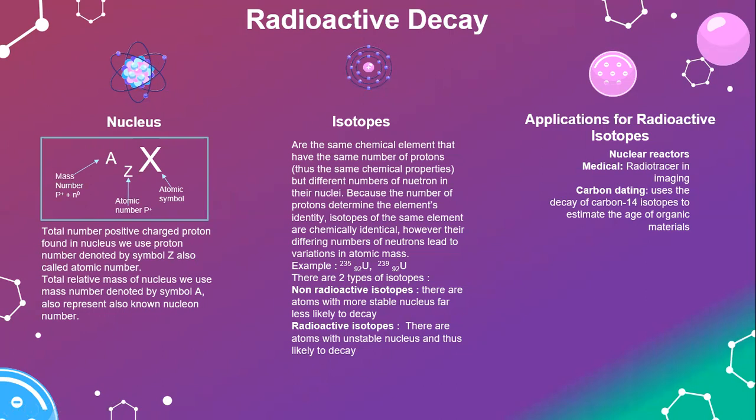There are two types of isotopes. One is the non-radioactive isotope — these are atoms with a more stable nucleus and are far less likely to decay. The other is the radioactive isotope — these are atoms with an unstable nucleus and are thus likely to decay. Some applications of radioactive isotopes include nuclear reactors, medical uses such as radio tracers and imaging, and carbon dating, which uses the decay of the carbon-14 isotope to estimate the age of organic material.